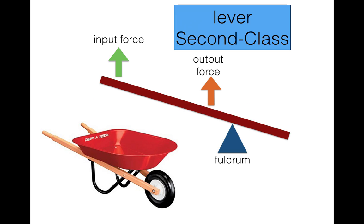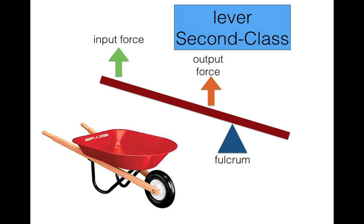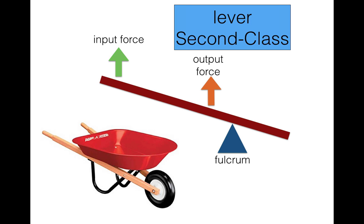Now let's look at second class and third class levers together. Notice the position of the fulcrum — the fulcrum is on the outside of each of these. The force arms are on the outside, and the direction of the forces are also in the same direction. Your input force is up and so is your output force. Second class and third class have the same direction — the input force and the output force are in the same direction and the fulcrum is on the outside.